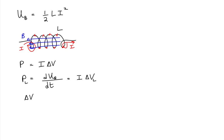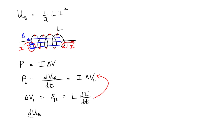From our previous derivation, the potential difference of an inductor is equal to the self-induced EMF, the magnitude of which is equal to the product of the inductance times the time rate of change of current through the inductor. Let's take this expression for the self-induced EMF and plug it into our expression for power. So the power of the inductor — the time rate of change of the magnetic potential energy — is equal to the product of the current, the inductance, and the time rate of change of current.